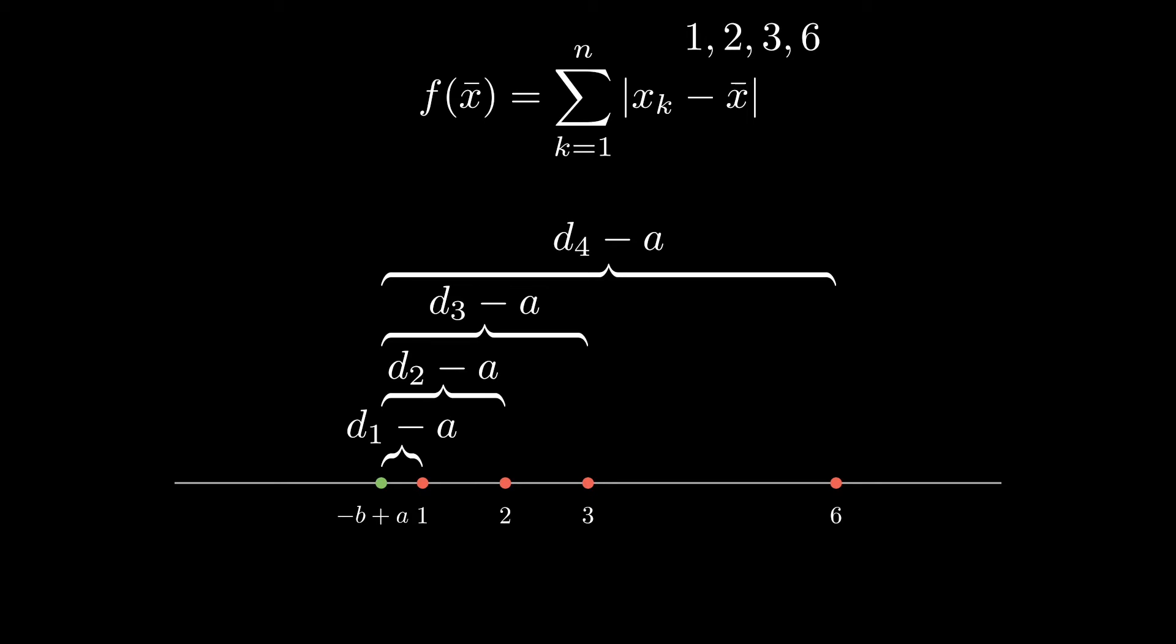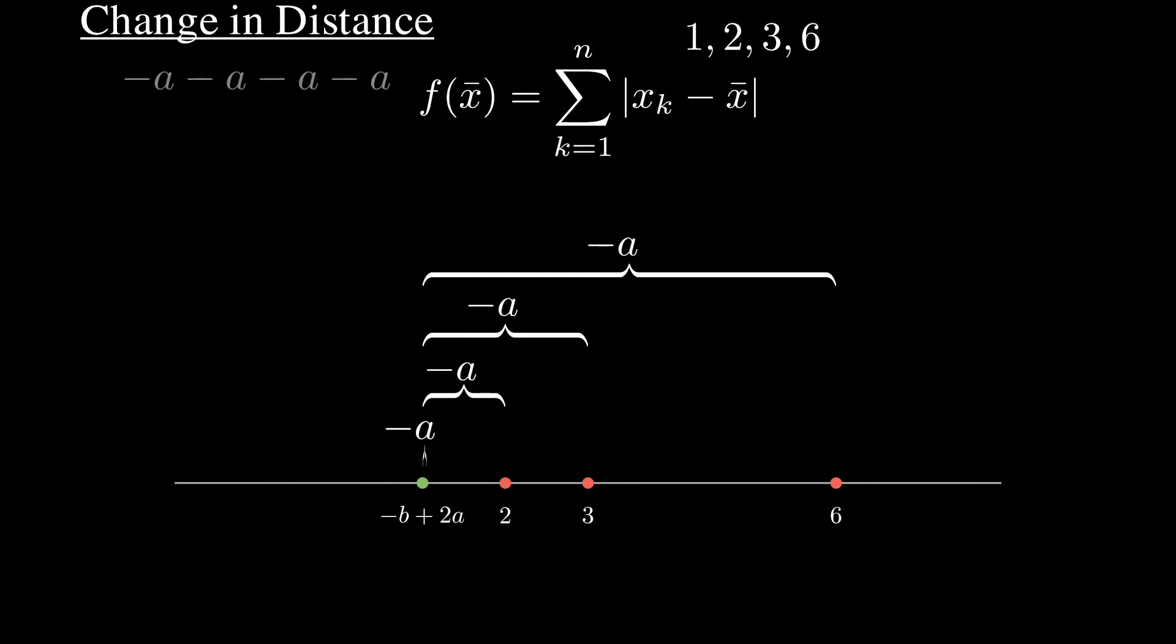As we have four points, this works out to a change in total distance of negative 4a. Let's say we keep doing this, repeatedly adding a until we reach our first number.